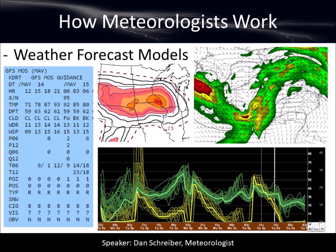Meteorologists also use computer models, which are great. They're obviously computer-based, using statistics or very complicated mathematical formulas that have to run on supercomputers. They give us ideas of what the temperature is going to be, where the rain and thunderstorms will be, and what the wind flow will be like at all sorts of different levels in the atmosphere. There are all sorts of different weather forecast models, and sometimes they even contradict each other. Meteorologists have to figure out which one to trust more. Sometimes we average them together, sometimes we throw one out completely. So the meteorologist is still very important because we've got to decipher all this information.